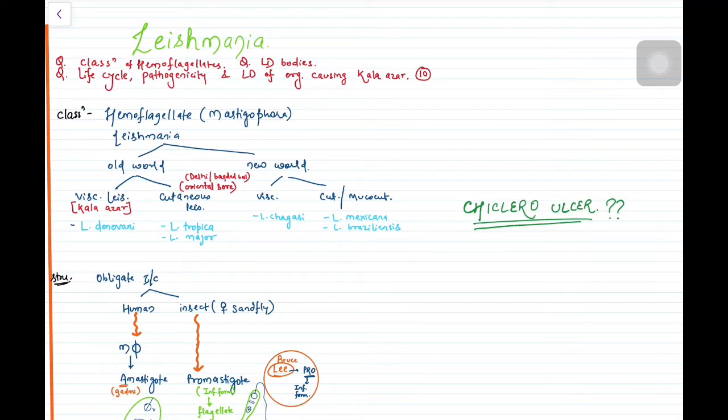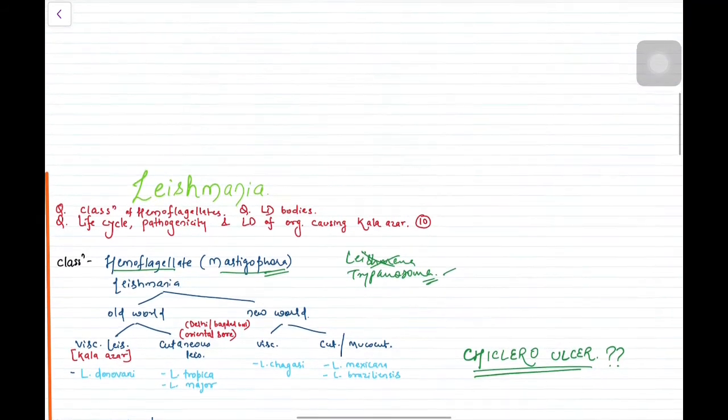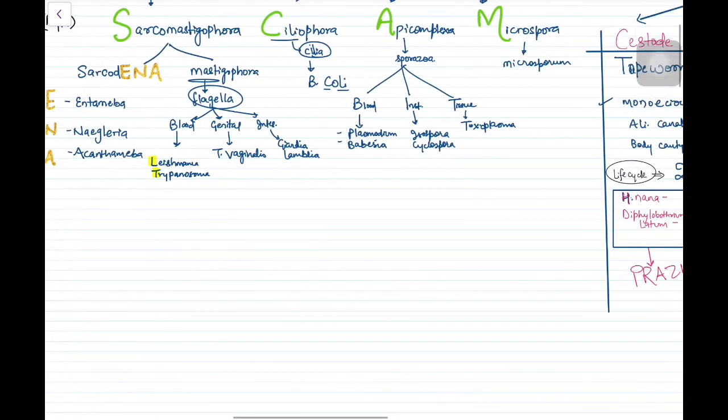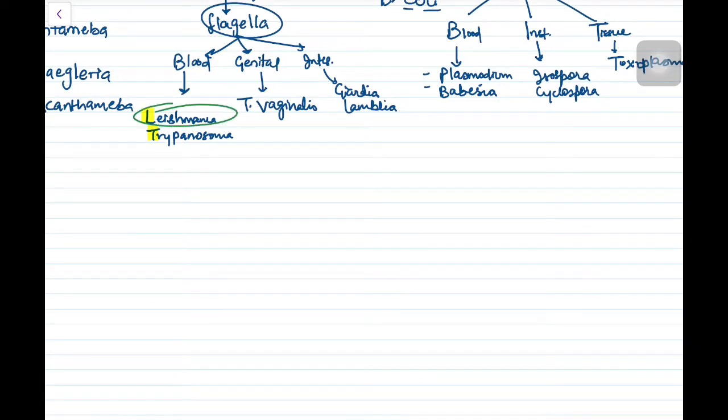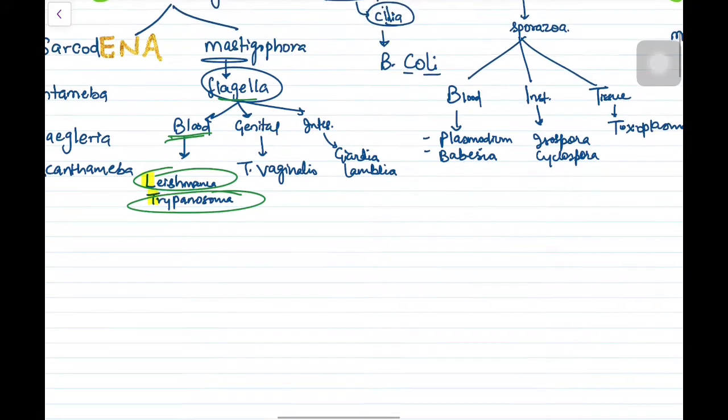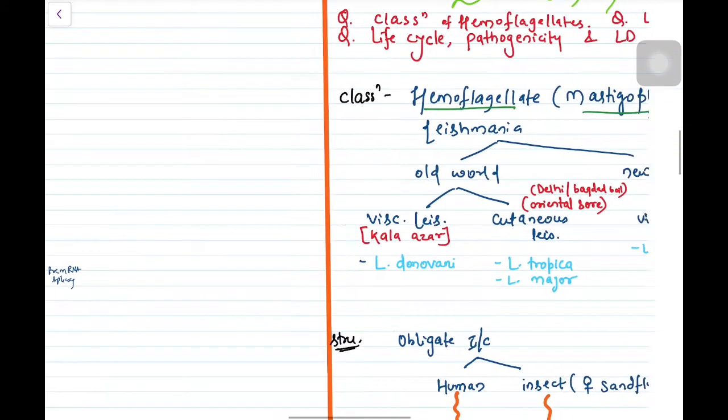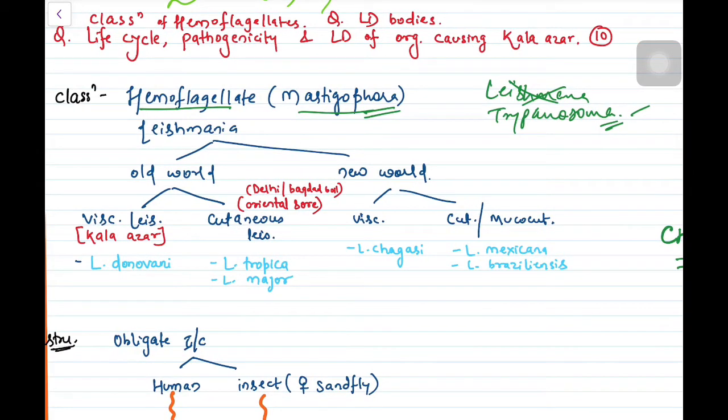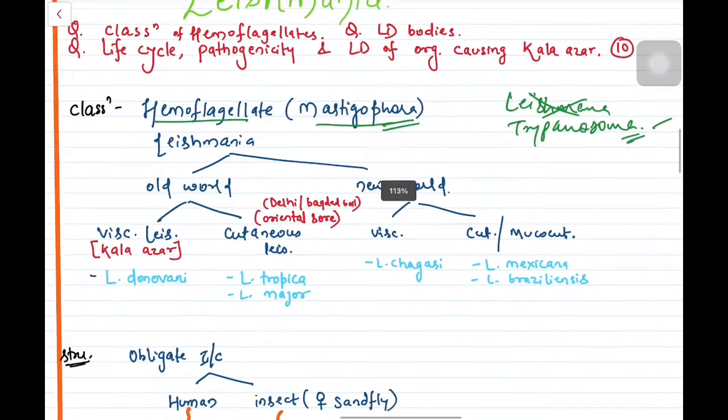So let us begin in the same format which we have been studying in biology and bacteriology. The first is classification. Now Leishmania comes under Haemoflagellate, that is Mastigophora. In this Haemoflagellate we have Leishmania and Trypanosoma. Today let's crack Leishmania.